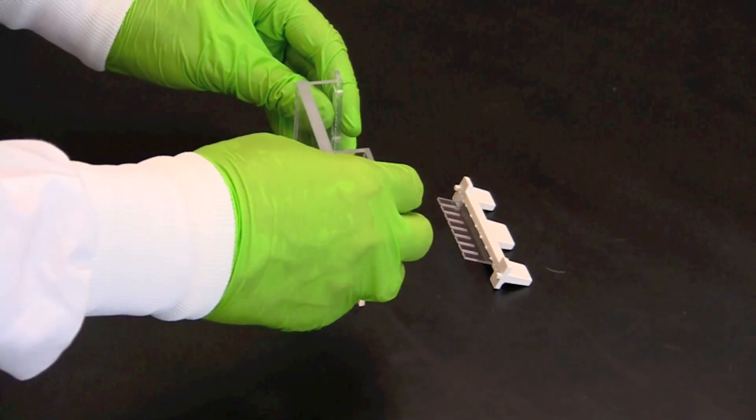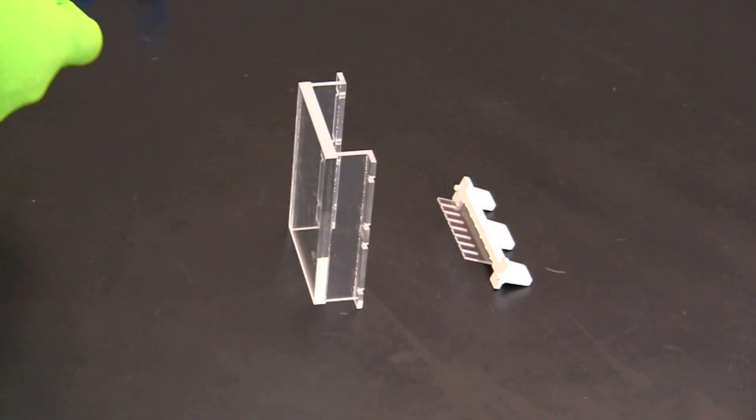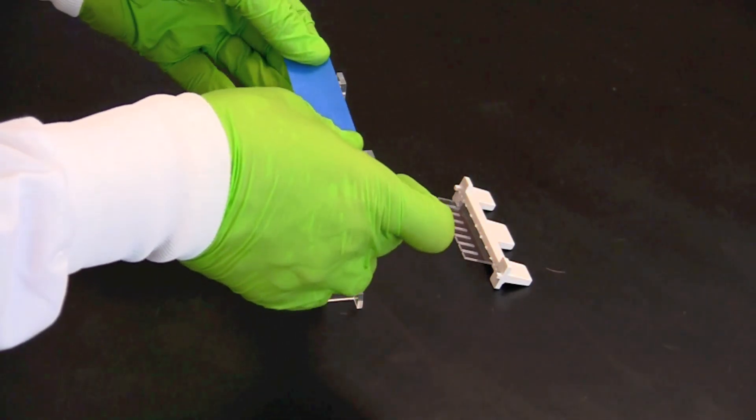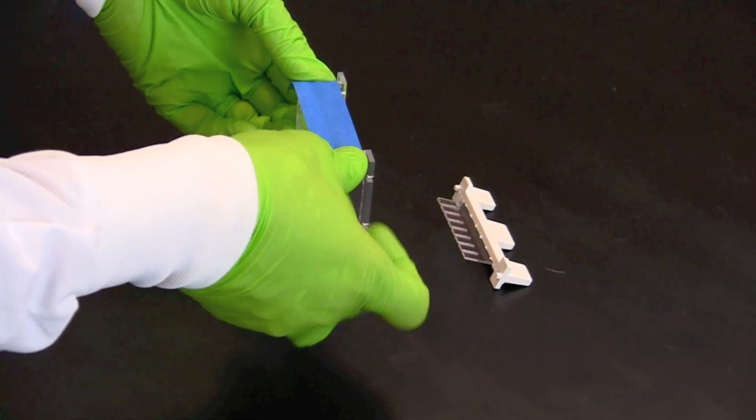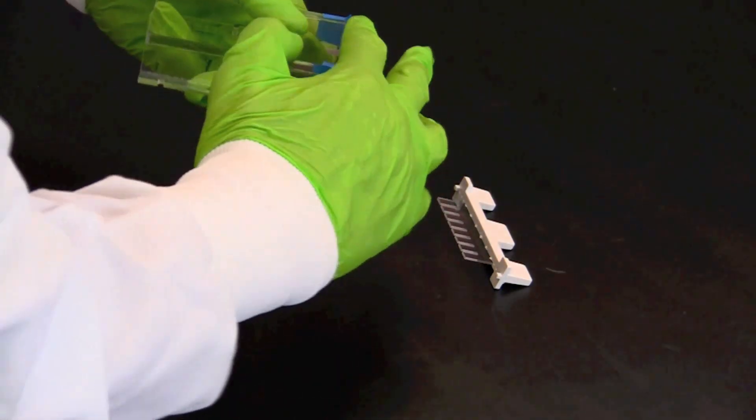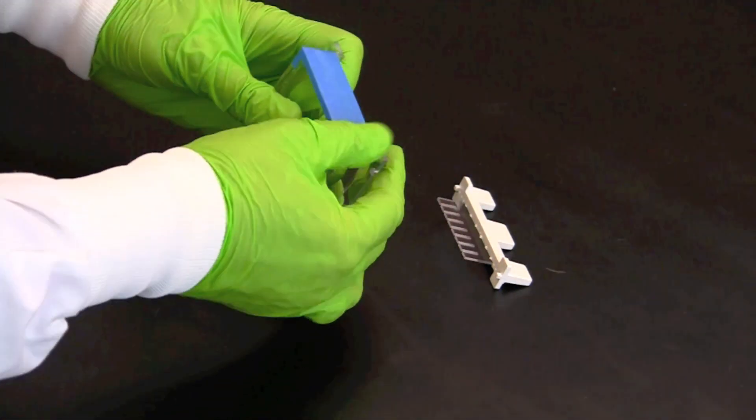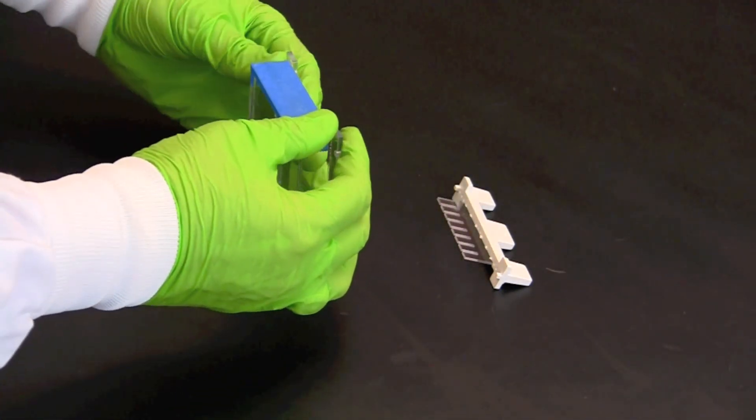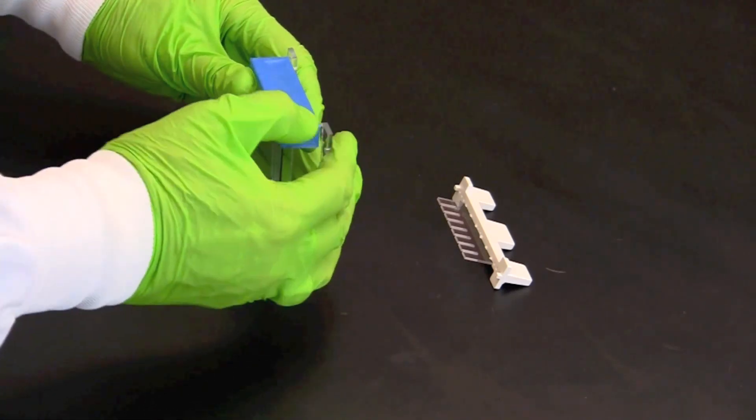Start by taping both ends of a gel tray with laboratory or painters tape, making sure to securely seal the edges of the tray. Press down firmly along each edge of the tape to ensure that there are no leaks.